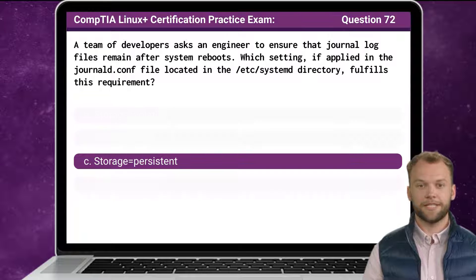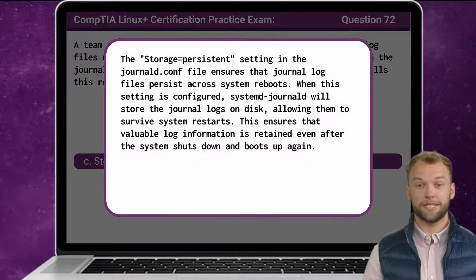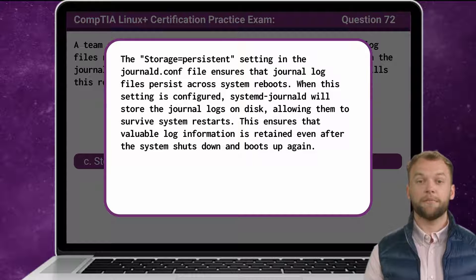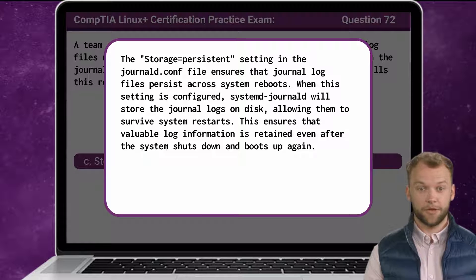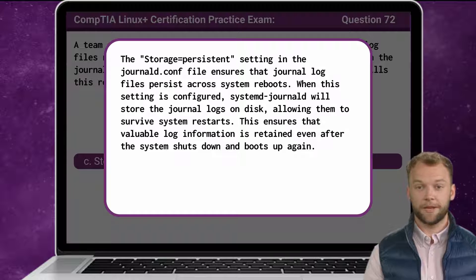The answer is C: Storage=persistent. The Storage=persistent setting in the journald.conf file ensures that journal log files persist across system reboots. When this setting is configured, systemd-journald will store the journal logs on disk, allowing them to survive system restarts. This ensures that valuable log information is retained even after the system shuts down and boots up again.